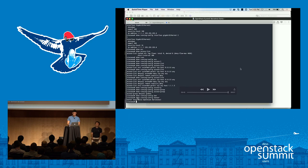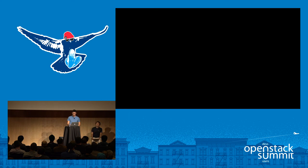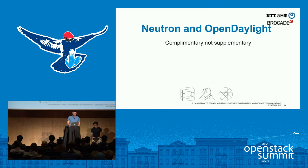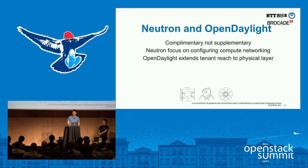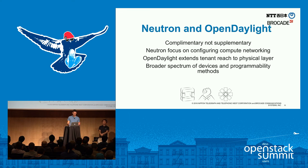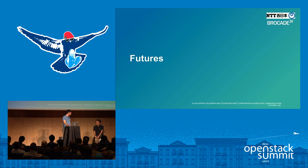That concludes the demo, switching back to the presentation. With Neutron and OpenDaylight, they're complementary — they can coexist. Neutron is great at doing the Layer 2 DC switching, but if you really want to reach into the underlay and program the physical devices using a multitude of different southbound APIs, you can now do that with OpenDaylight. Now I'm going to go back to Kimura-san, who's going to conclude the presentation and talk about some future plans.